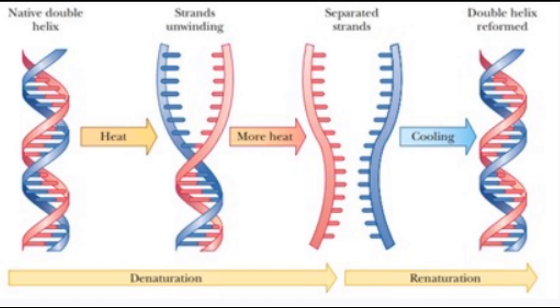There's a picture on the screen, this is just to show you before I give my explanation. It shows that a DNA double helix, if you add heat to it the strands will unwind, and then if you have more heat the strands will separate, and if you allow it to cool it will then reform.